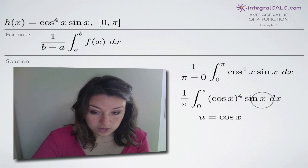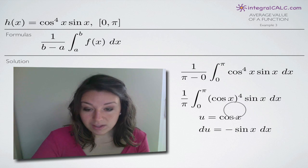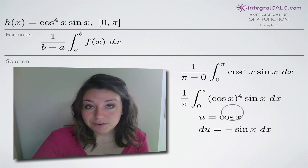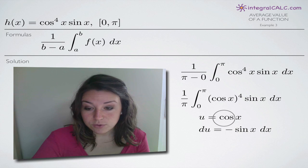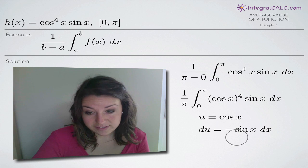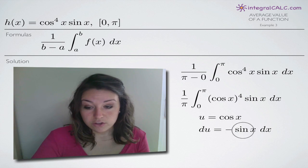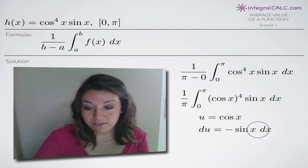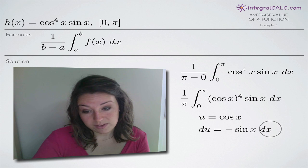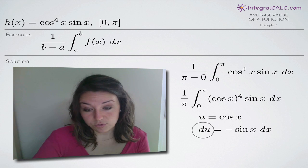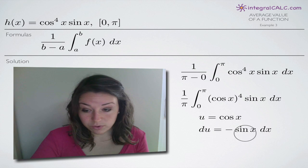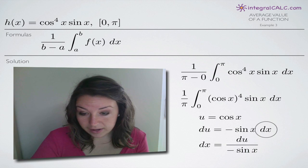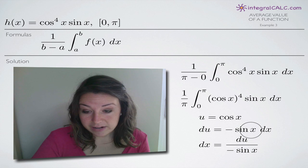We set u equal to cos of x and then take the derivative: du equals the derivative of cos of x, which is negative sin of x. So we have negative sin of x dx. We always write the dx when we take the derivative du.